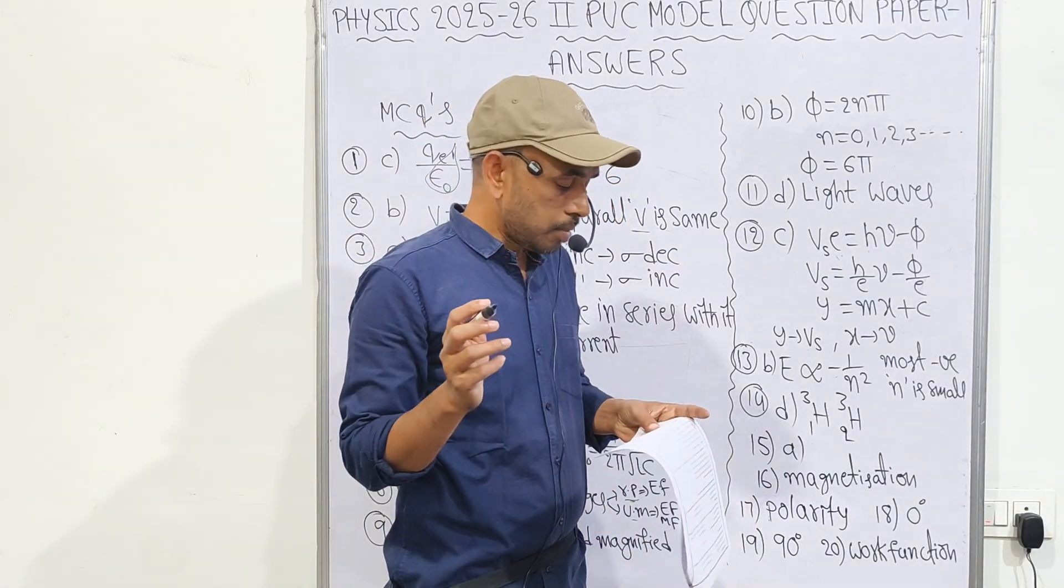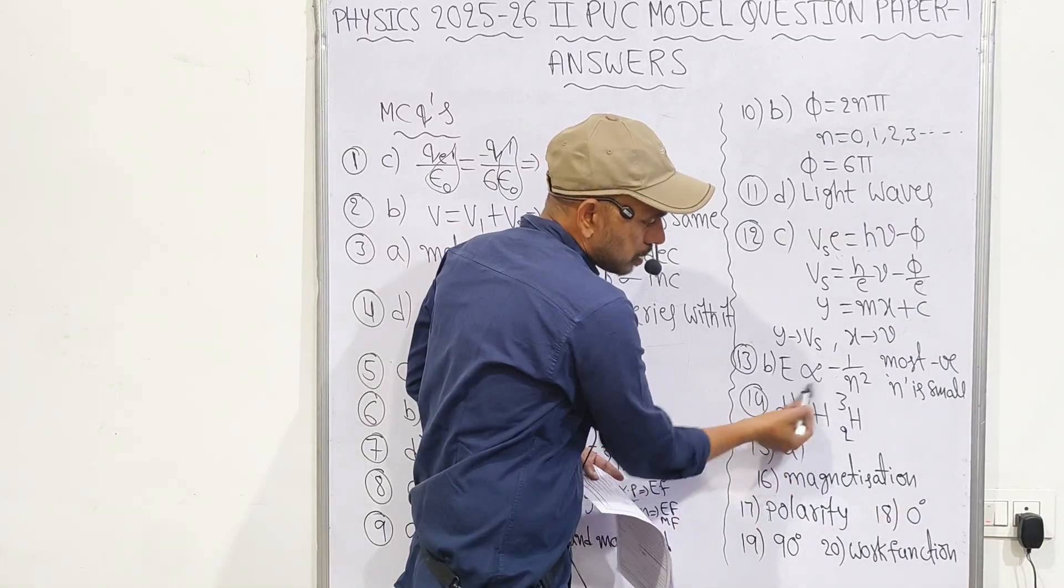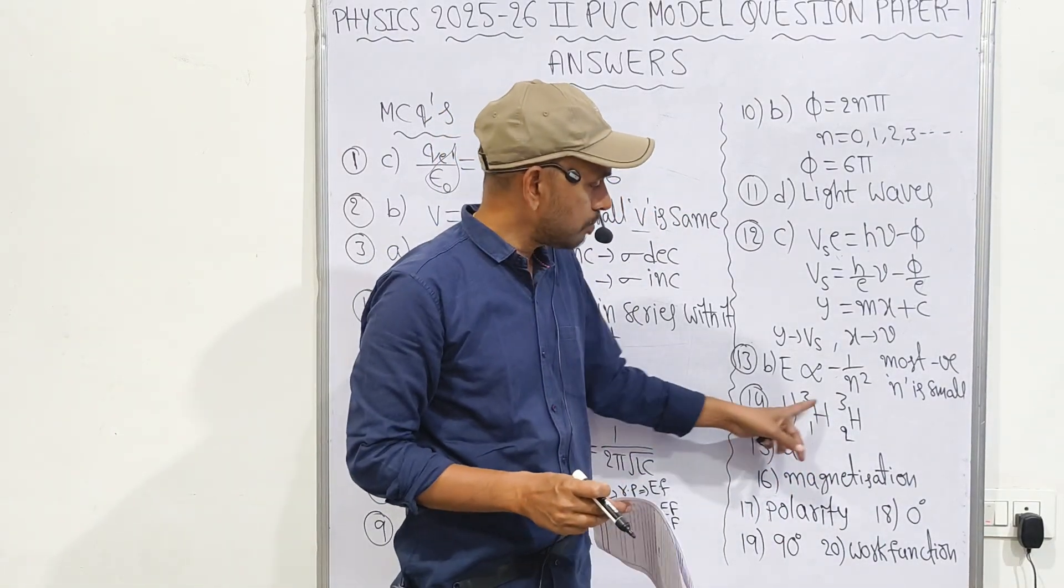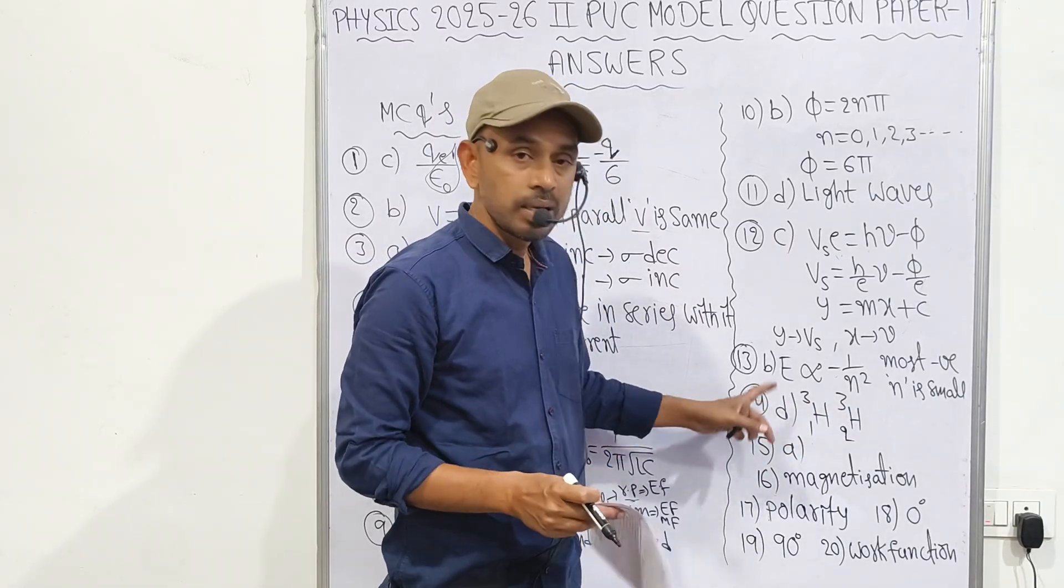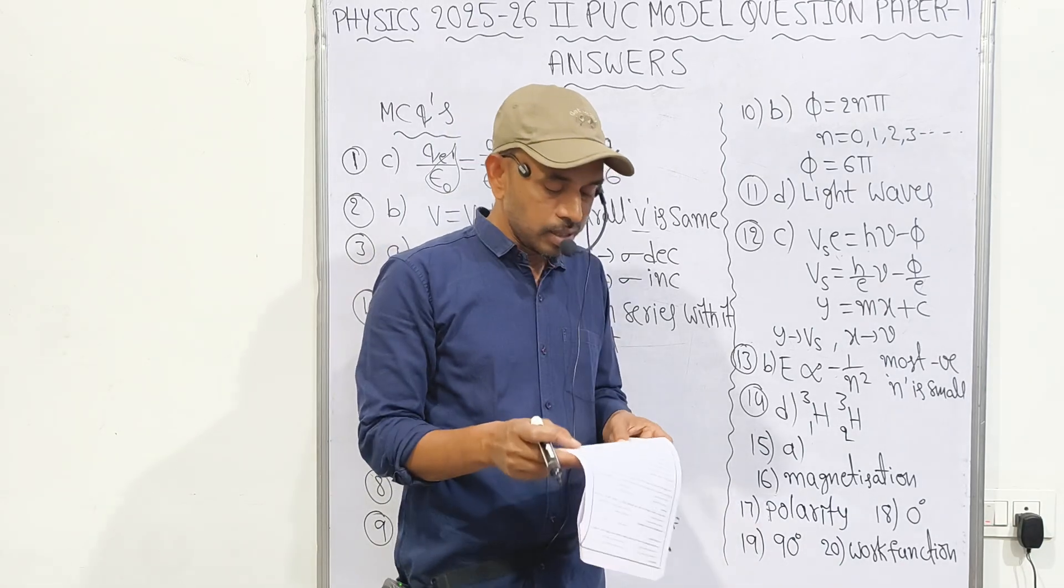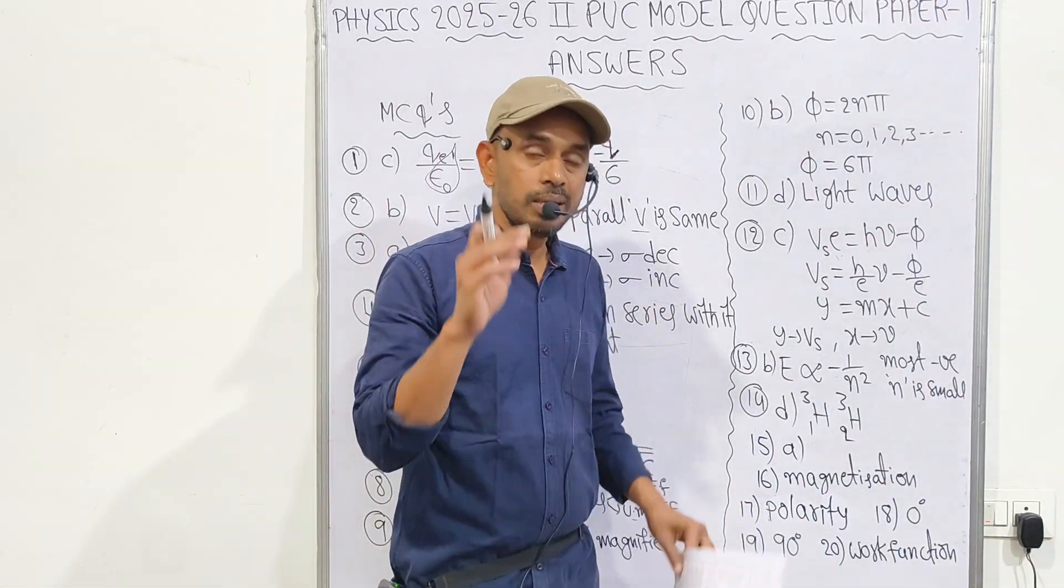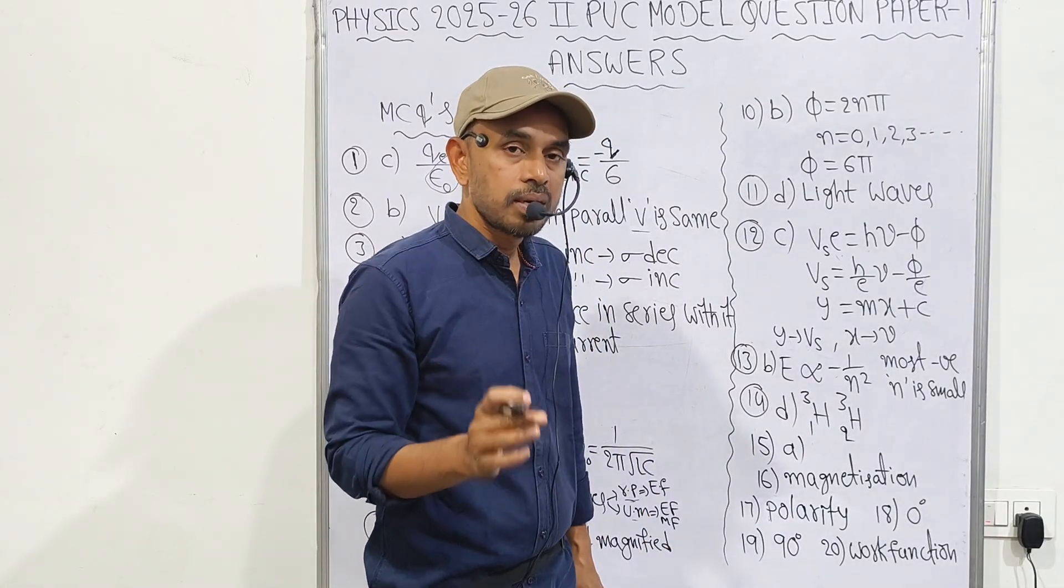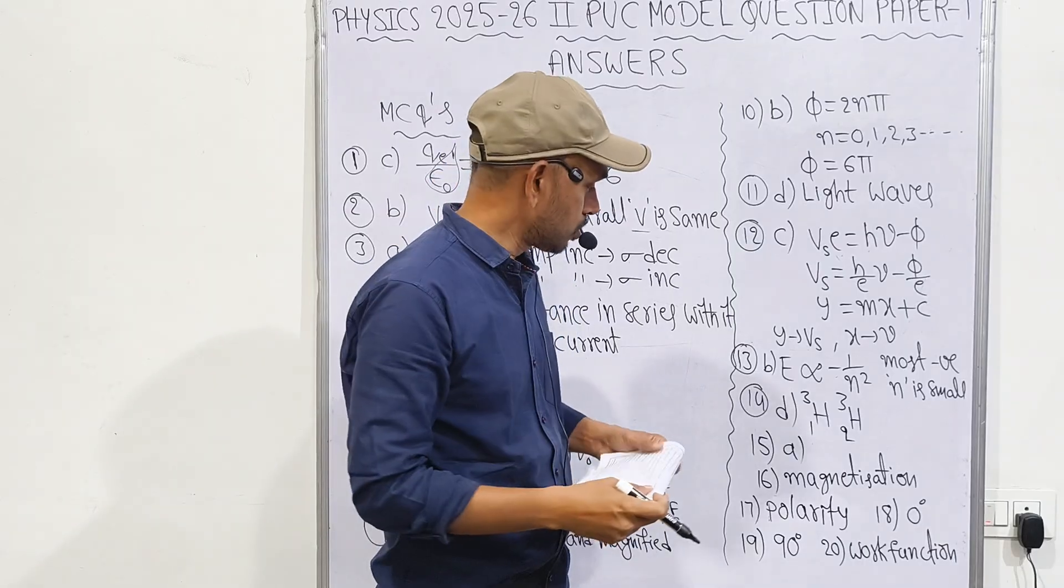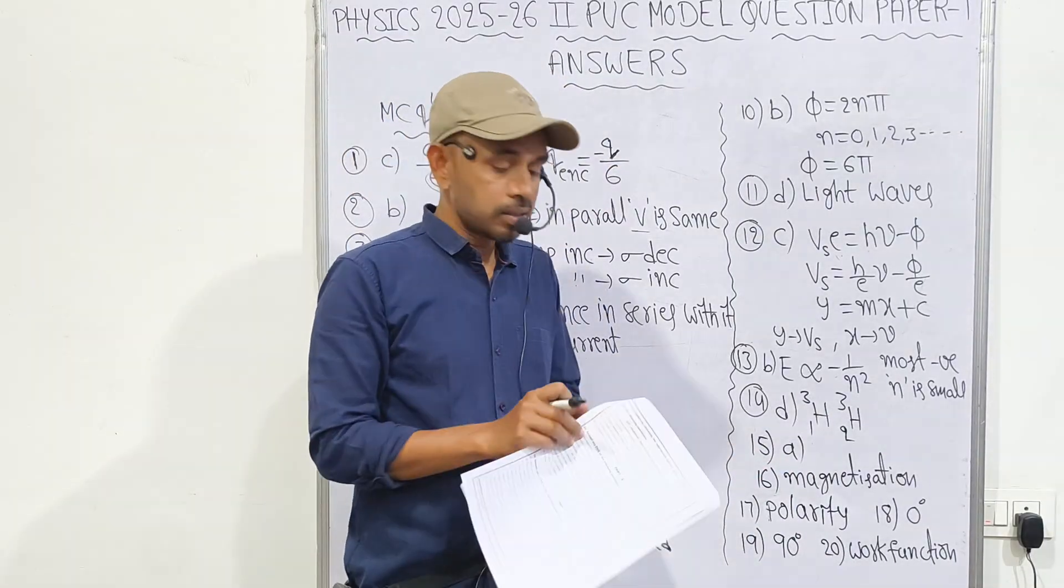Fourteenth one: an example for isobars. Isobars have same mass number. In options, same mass number is there for only option D. That's why option D is correct. Fifteenth: when a PN junction diode is reverse biased, both depletion region width and barrier potential increases. Forward bias means decreases. 15th one, correct option is A.